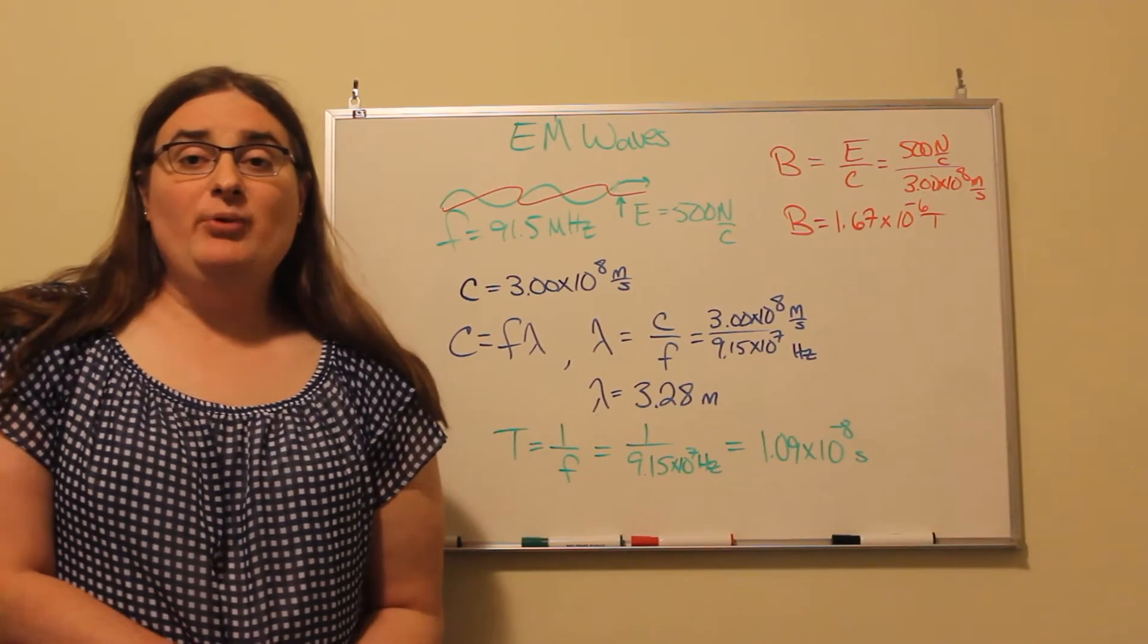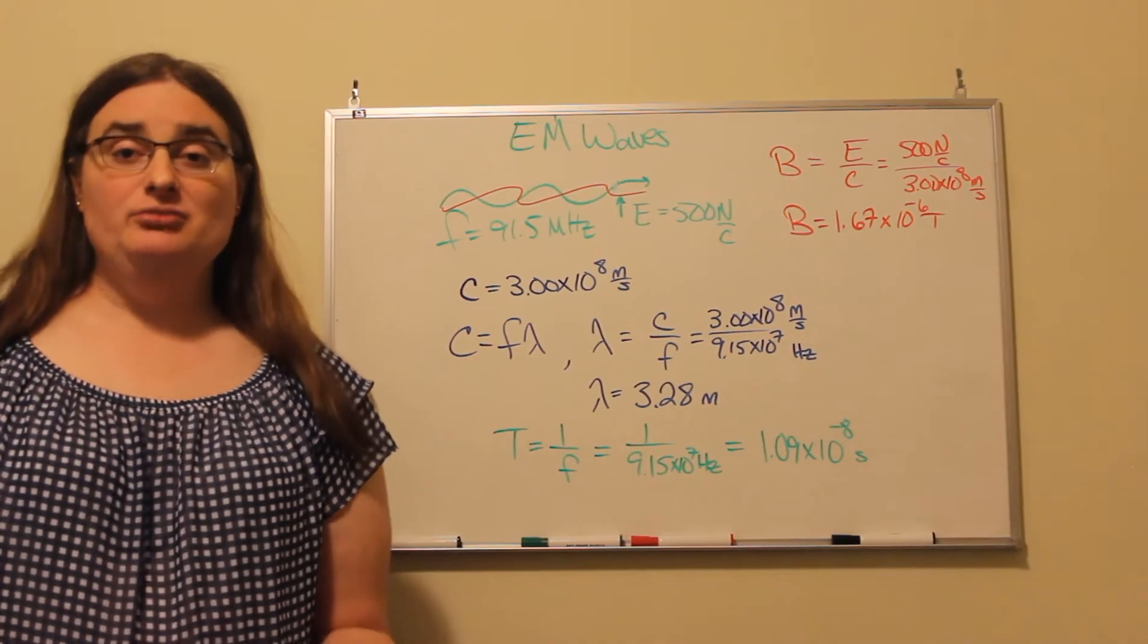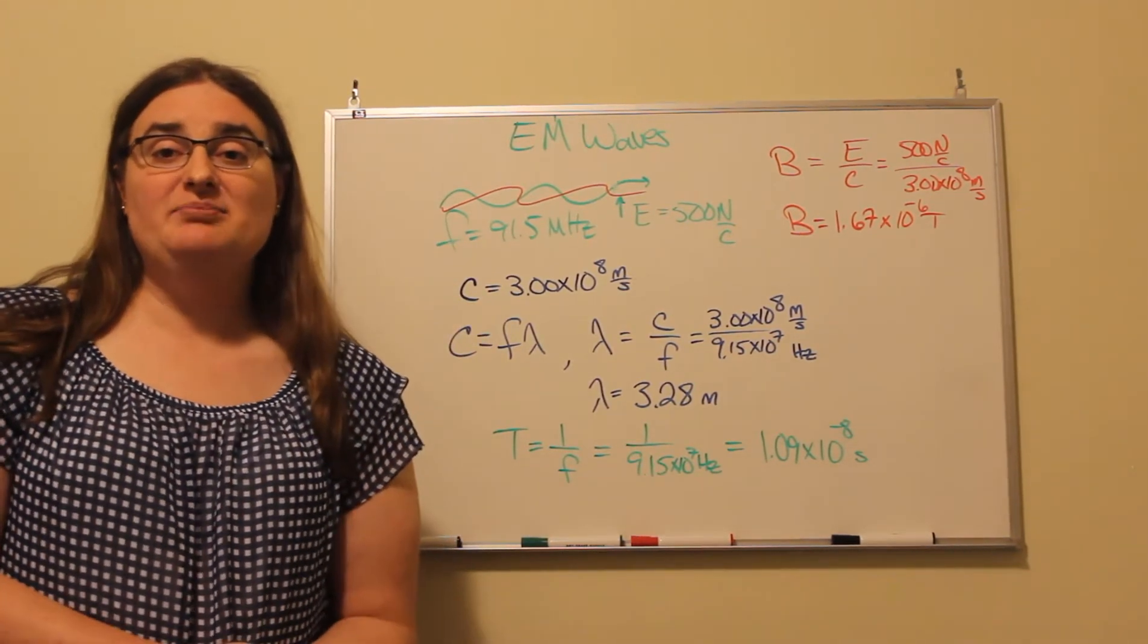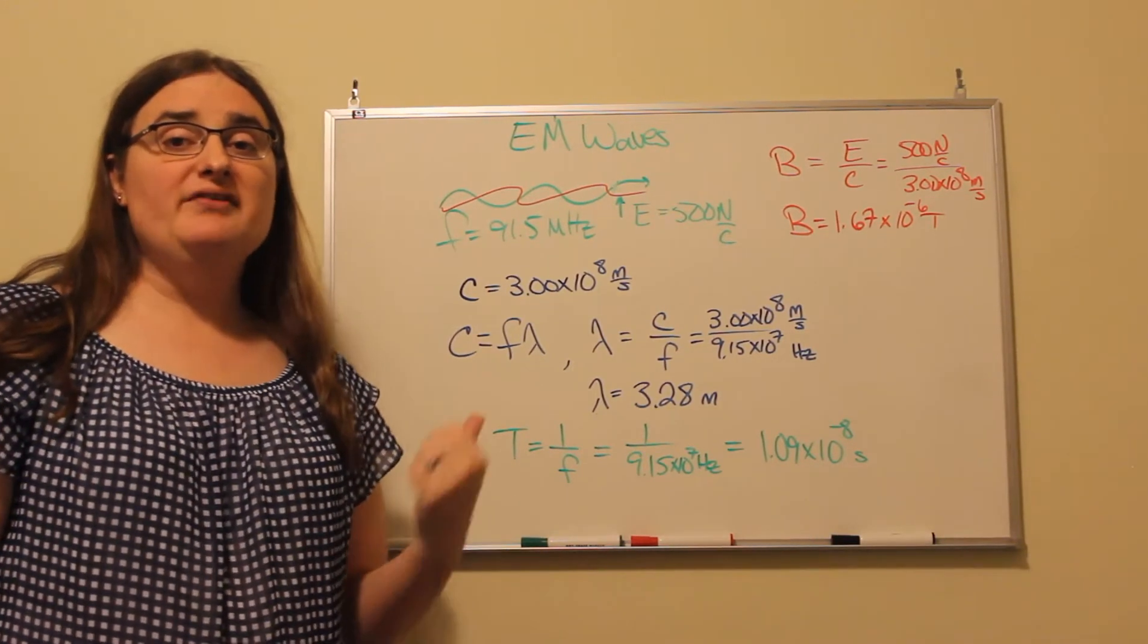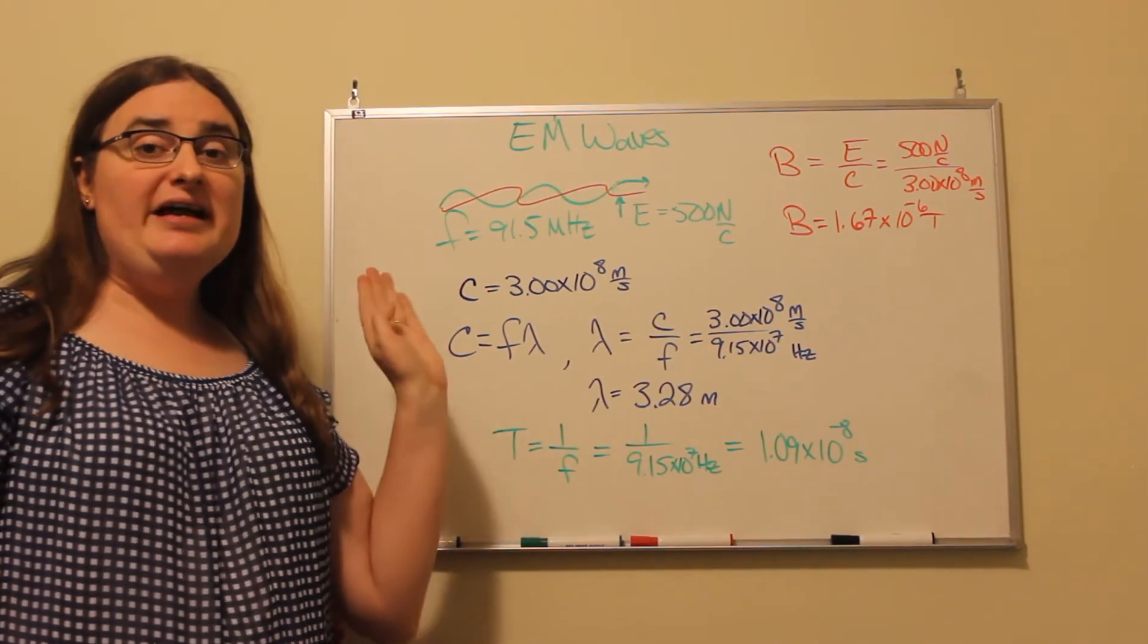So when we take a look at any waves, waves travel at a speed, and for light in a vacuum, it's the speed of light in a vacuum, which is 3 times 10 to the 8 meters per second. And for any wave, the speed of a wave is the frequency f times the wavelength lambda. So with light, if we know the frequency, we know the wavelength.